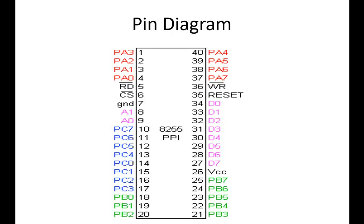The pin diagram of PPI 8255 is given. From pins 1 to 4 we have Port A0 to A3, and from pins 40 to 37 we have Port A4 to A7. At pins 5 and 6 we have read and chip selection. Pin 7 is ground. Pins 8 and 9 are the address section, and from pins 10 to 17 we have the Port C section. Pins 10 to 13 are PC7 to PC4, and from pin 14 to pin 17 we have PC0 to PC3. Pin 18 starts Port B0, going through to pin 25 which is Port B7.